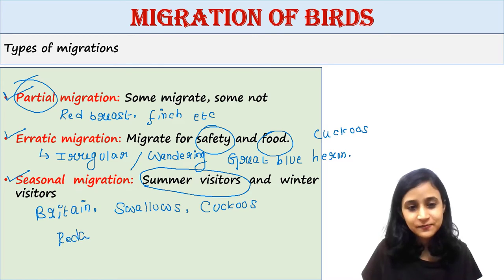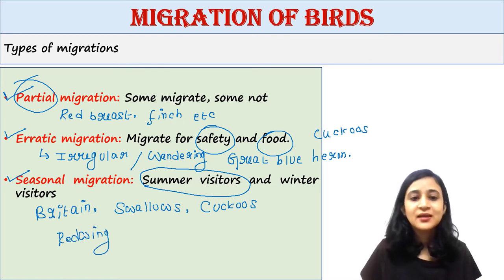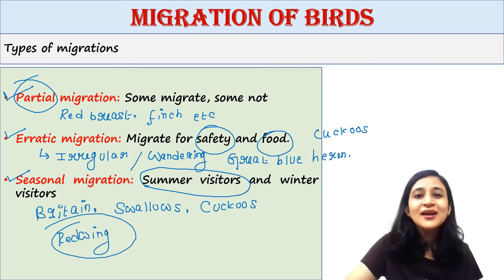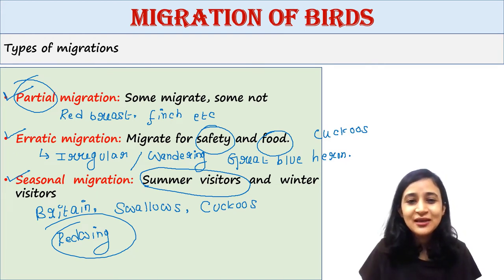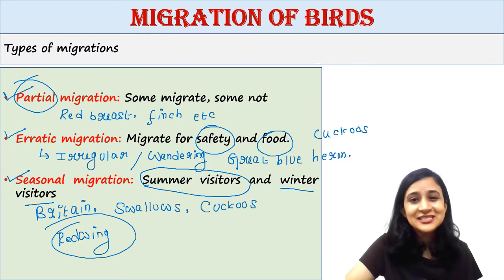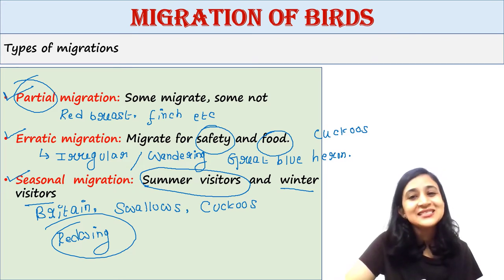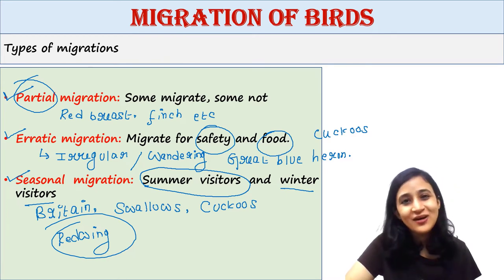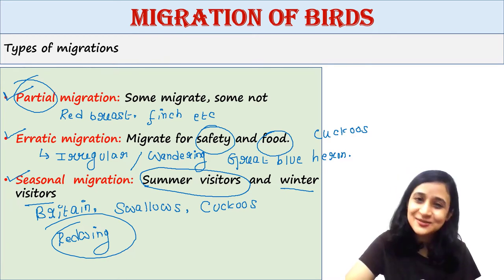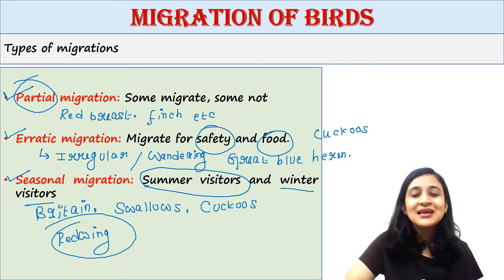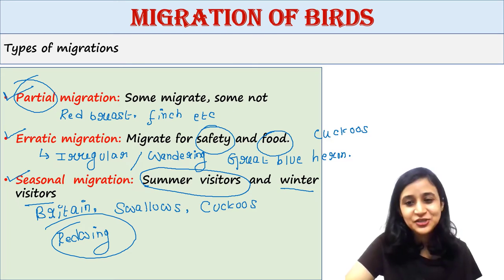Some birds such as the redwing are winter visitors. They arrive in autumn from the north, stay throughout the winter, and then fly northwards again in spring. So these birds are performing seasonal migration.